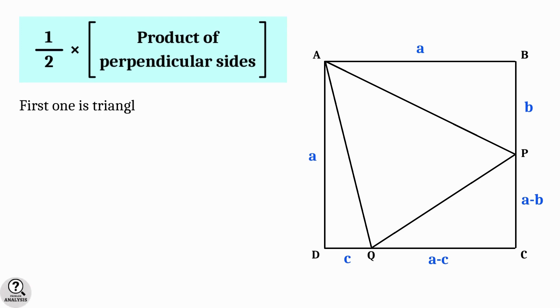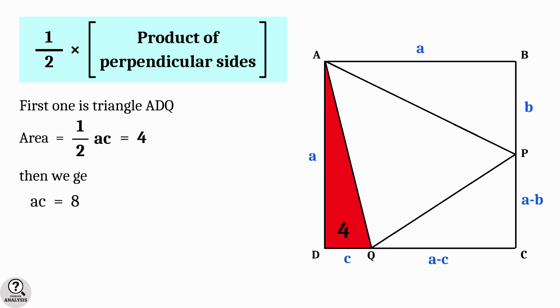First one is triangle ADQ. Clearly the perpendicular sides are a and c, which implies area equal to half ac, which is given as 4 square units. Then we get ac equal to 8. Put this as equation 1.